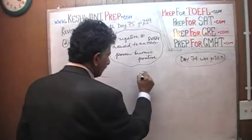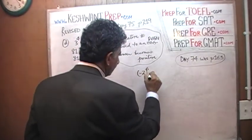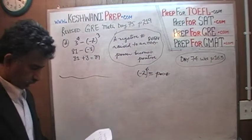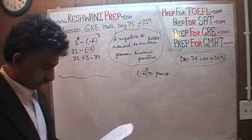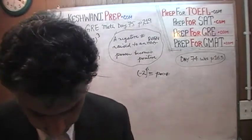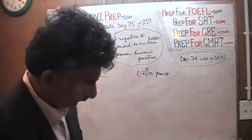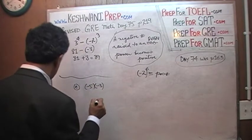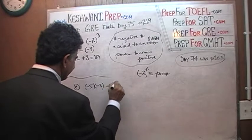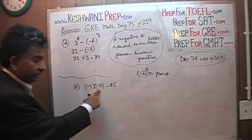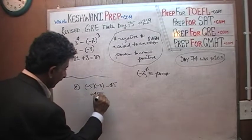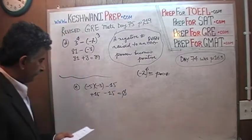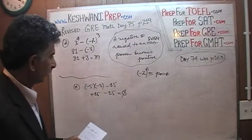A negative number raised to an even power becomes positive. For example, negative 2 raised to a 6th is a positive number. We were at D. Let's look at E. E says negative 5 times negative 3 minus 15. Negative 5 times negative 3 is a positive 15. Positive 15 minus 15 is just going to give you a big fat 0.